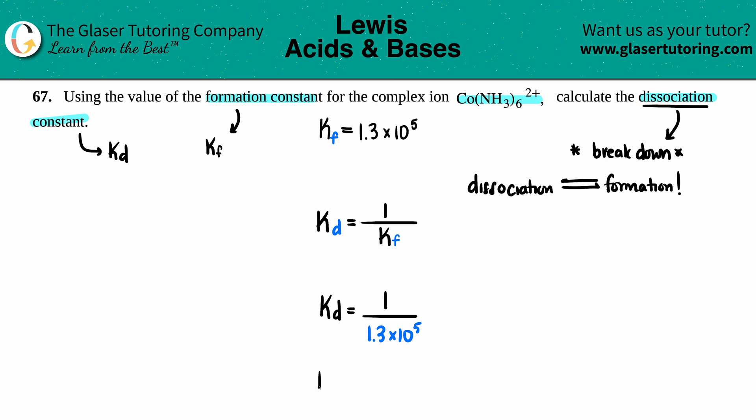Let's just plug it in and solve. 1 divided by 1.3 times 10 to the fifth. I get 7.7 times 10 to the negative 6, no units for any K value, and that is the final answer.